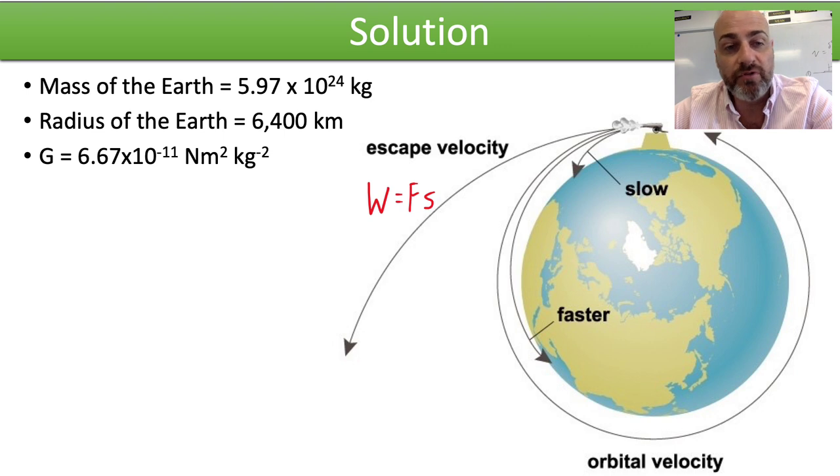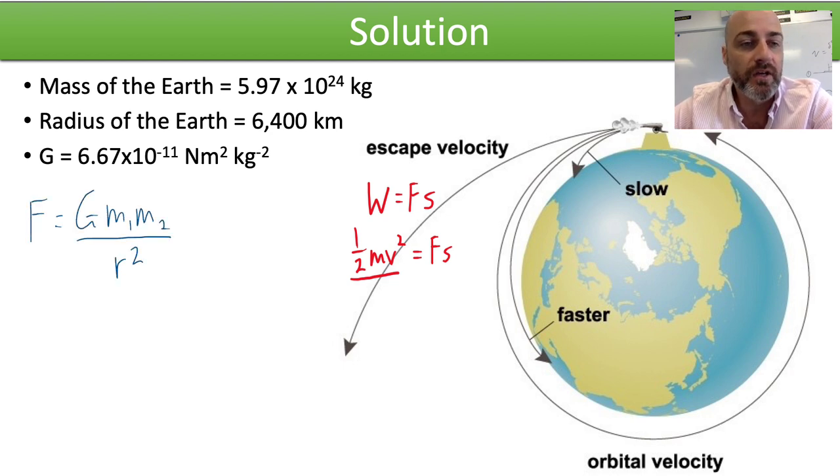So, work done requires a resultant force acting over a certain distance. The work done in this case is kinetic energy in order to leave the pull of Earth's gravity, go fast enough that you overcome that force.